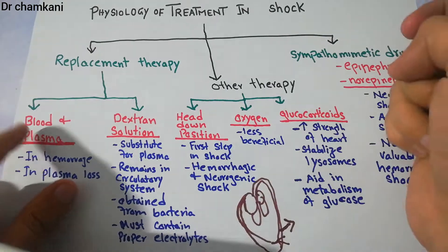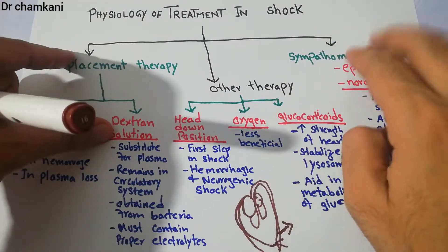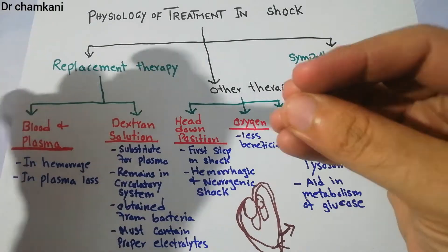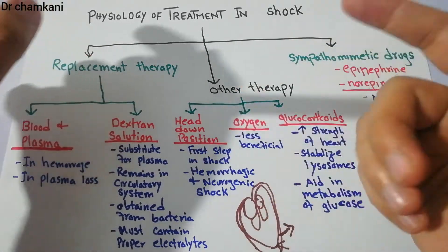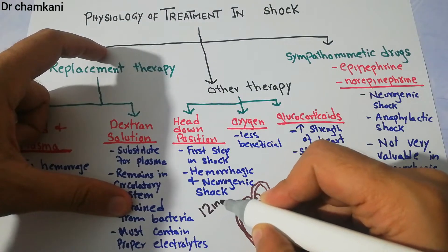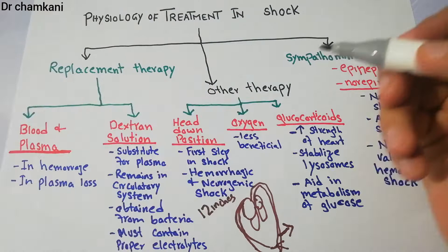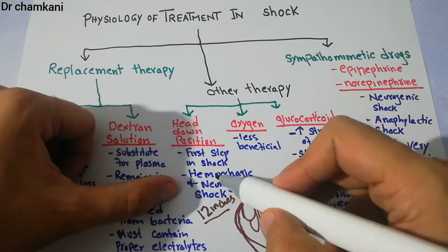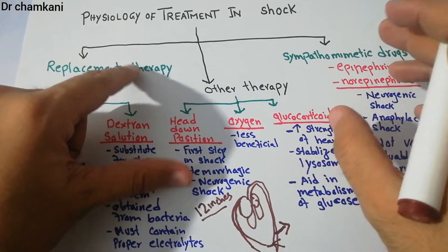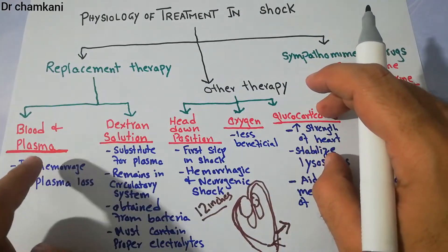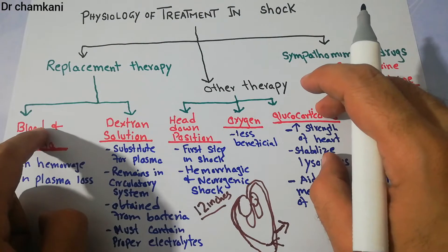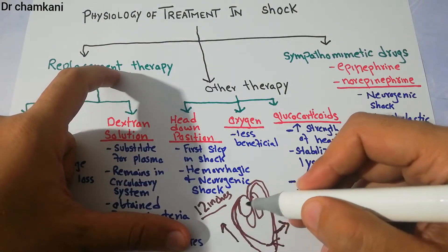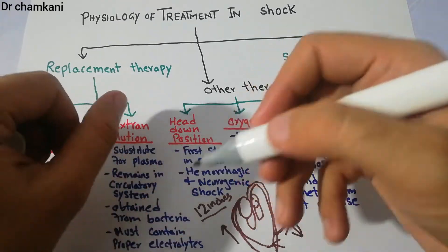Other therapies include emergency maneuvers like the head-down position. Whenever a patient is in shock, the first thing to do is put the patient in head-down position, with the head ideally 12 inches below the feet. This is very useful in hemorrhagic and neurogenic shock. It basically increases the venous return towards the heart and decreases blood flow towards the legs, so more blood is available for circulation.